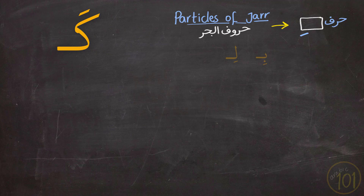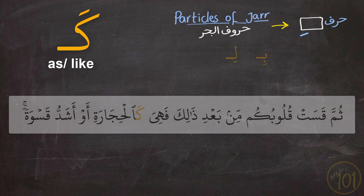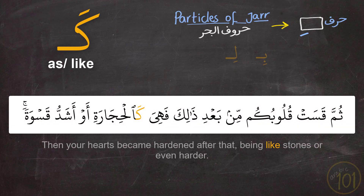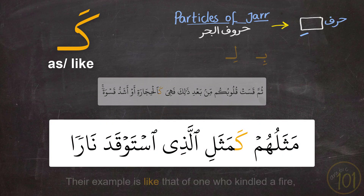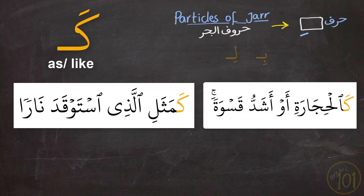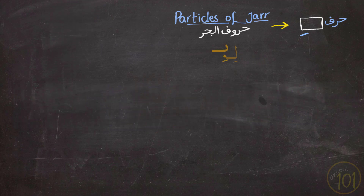The next particle is كَ, which means 'as' or 'like.' We see it used in these examples: ثُمَّ قَسَتْ قُلُوبُكُمْ فَهِيَ كَالْحِجَارَةِ, and مَثَلُهُمْ كَمَثَلِ الَّذِي اسْتَوْقَدَ نَارًا. Here we also notice that the particle كَ is only attached to nouns and causes the noun after it to have كسر.